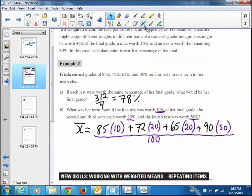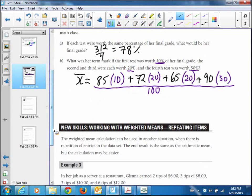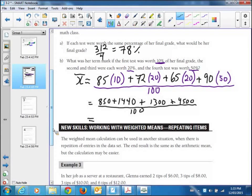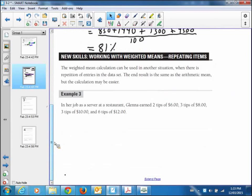You do the arithmetic, take 85 times 10, plus 72 times 20, and so on. And then divide by 100. You're going to get the following numbers: 850 plus 1440 plus 1300 plus 4500. When you do that arithmetic, it should come out to be 81%. Divide by 100 after you add all of those. I know I'm going fast. You should be pausing and working through it yourself, too.